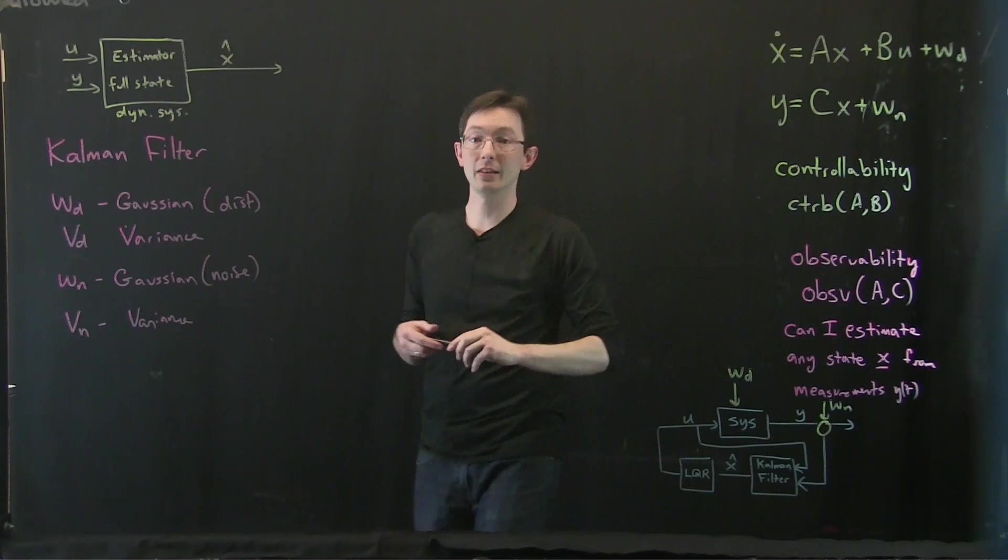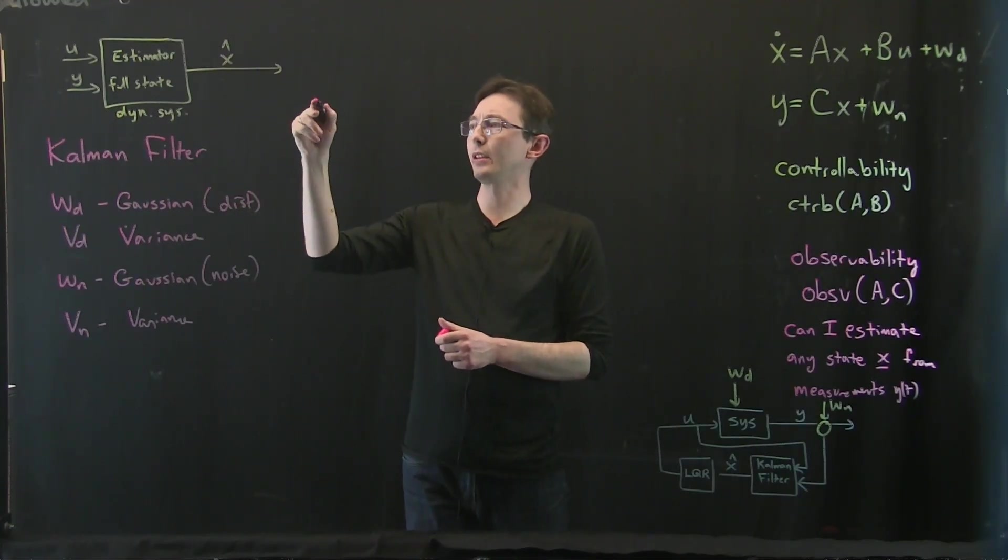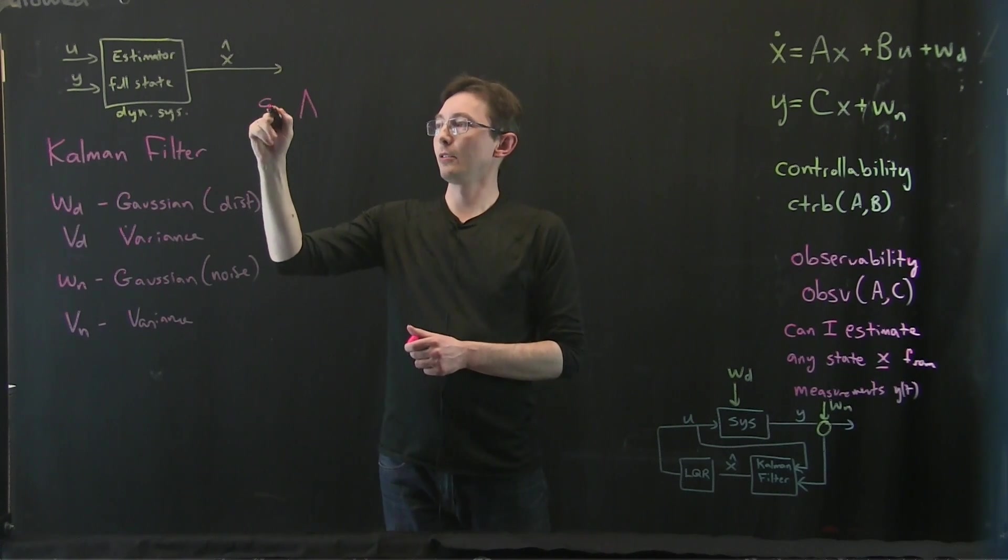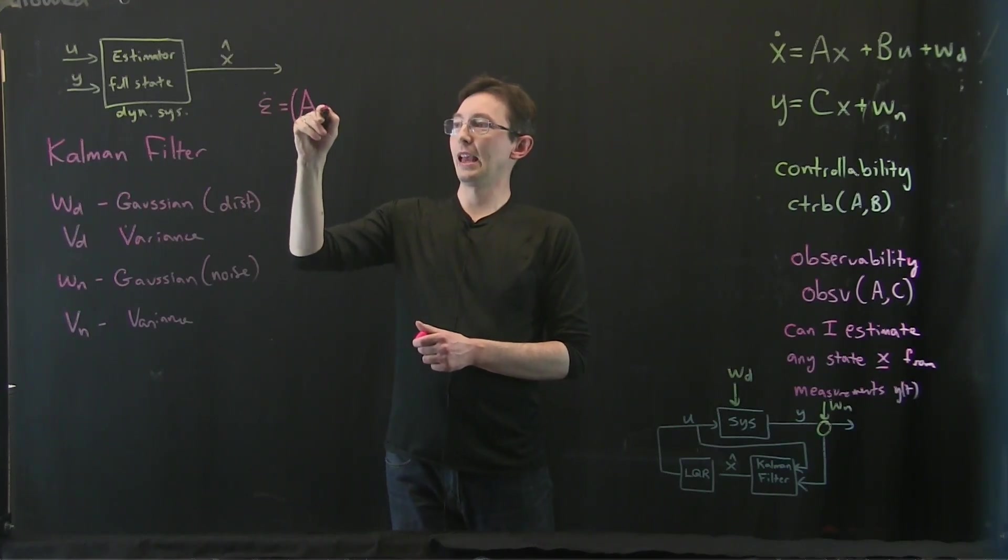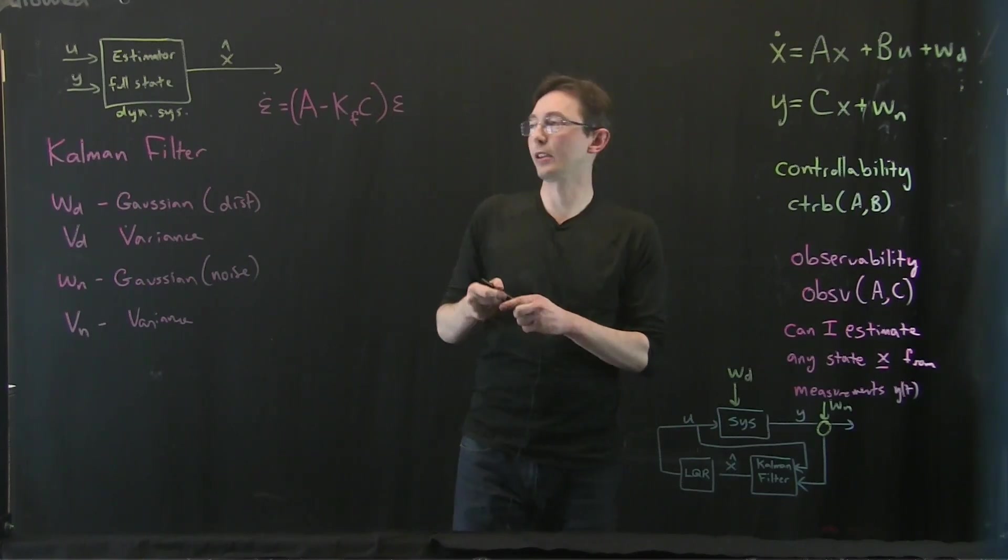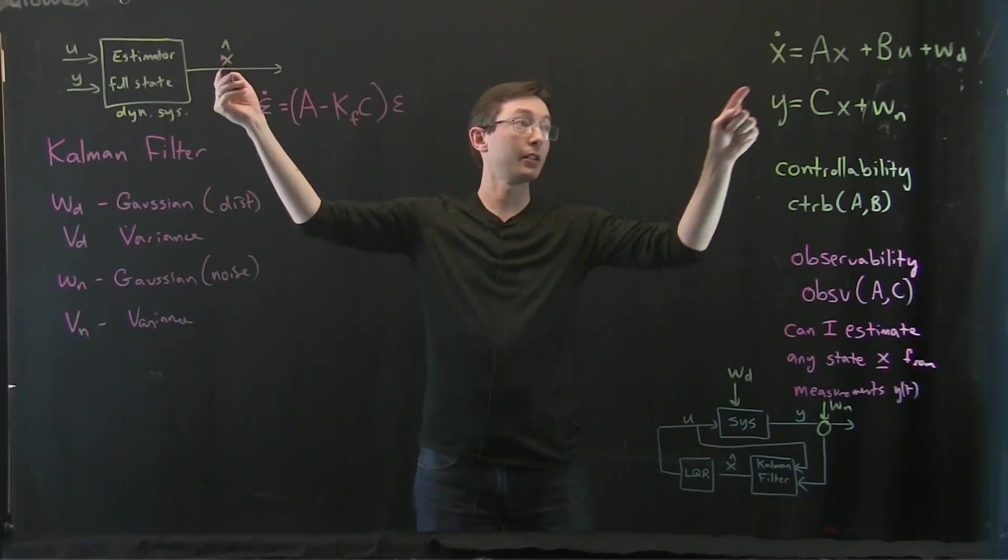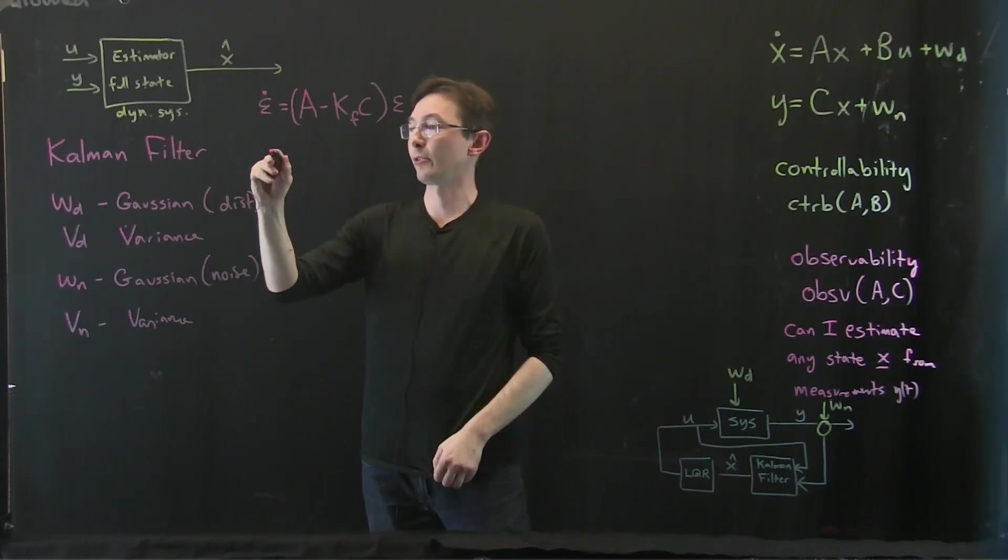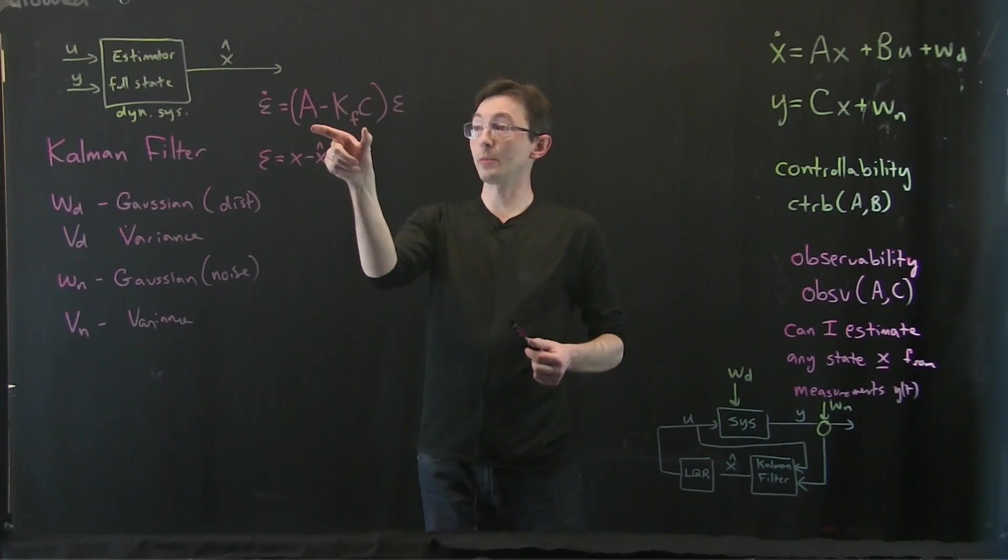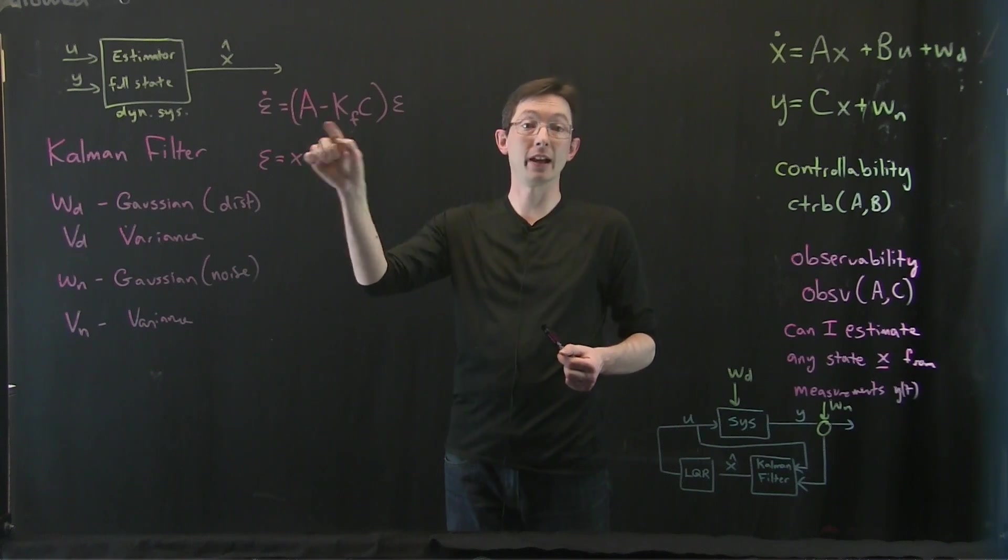There's this balance. Remember we had, we found that we could essentially write the error of our prediction equals A minus Kalman filter C times error. We could make our estimate X hat converge arbitrarily quickly to X. Remember, error was just X minus X hat. We could make this converge arbitrarily quickly by choosing the Kalman filter gains to make this very stable, very negative eigenvalues.